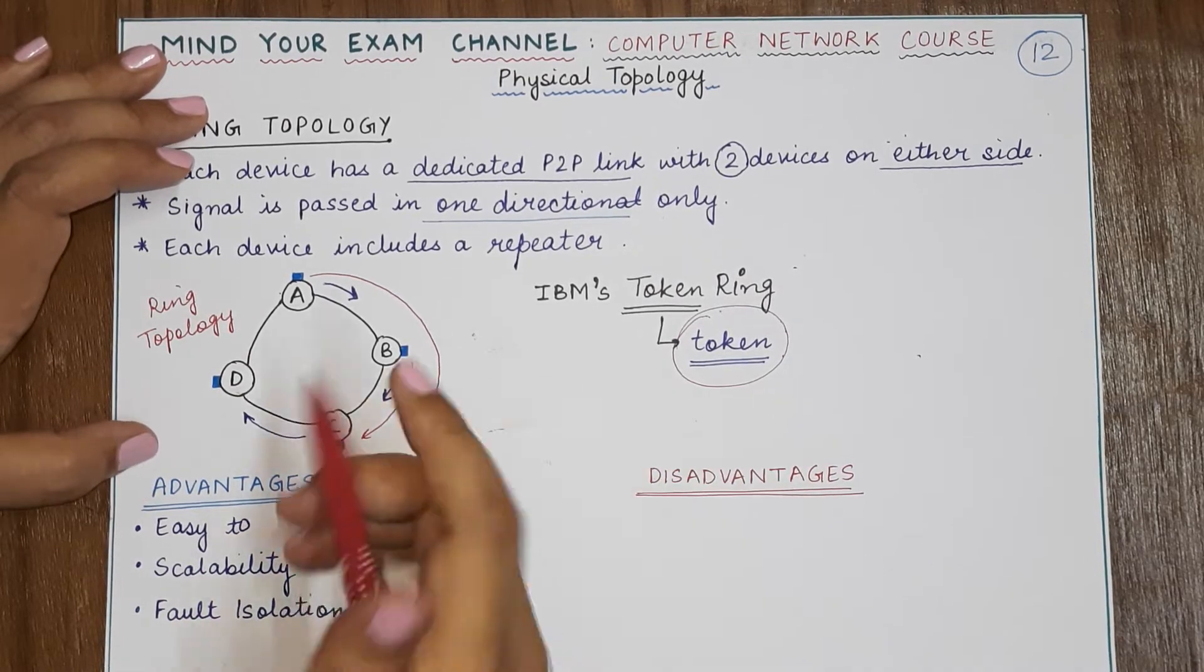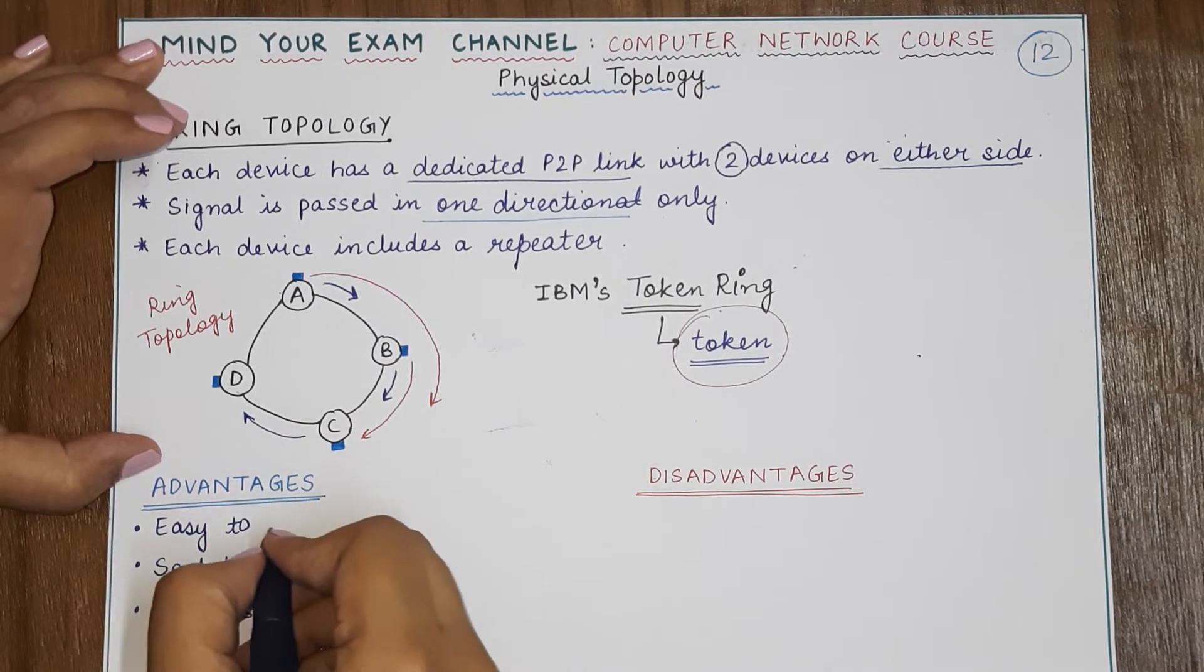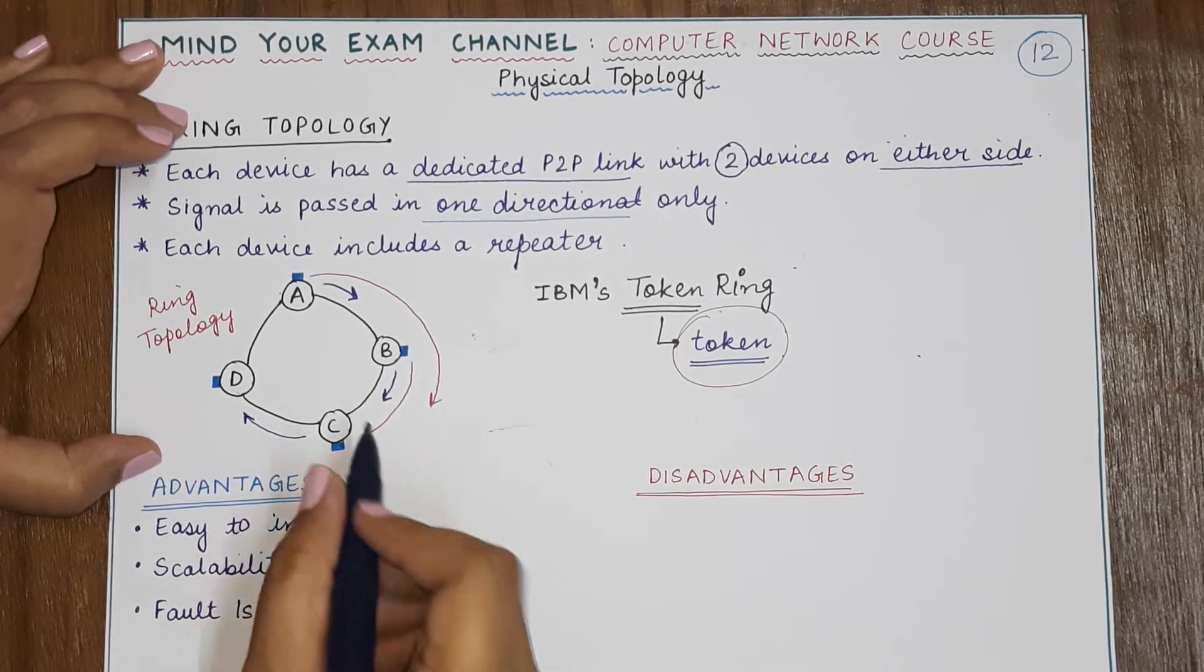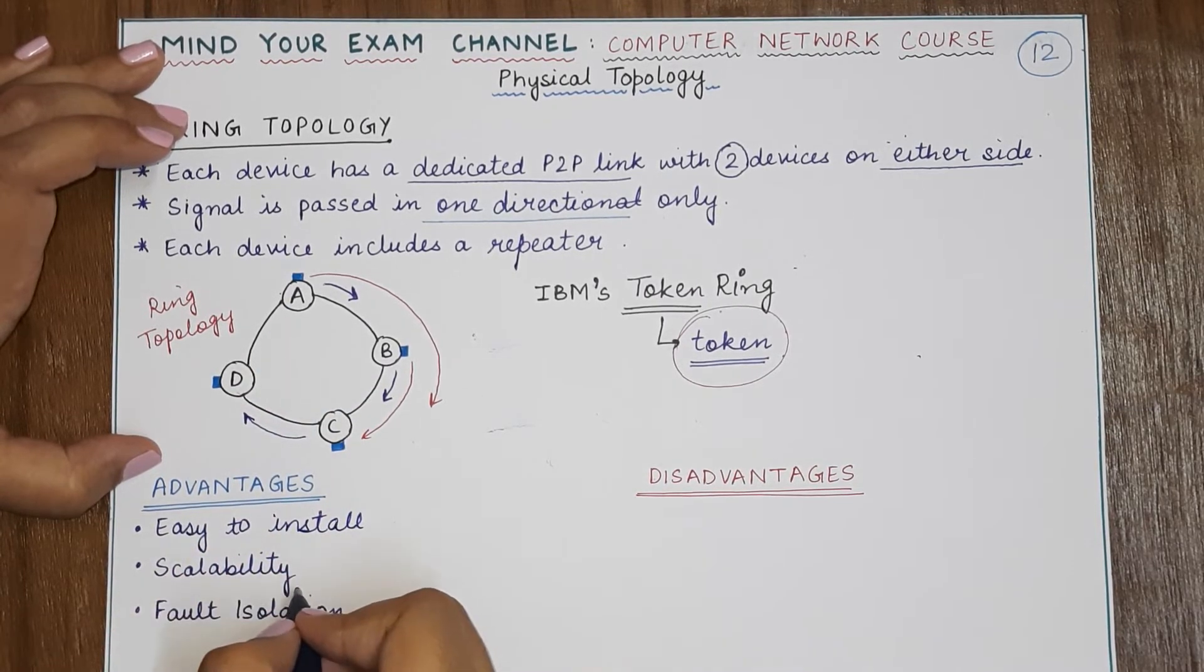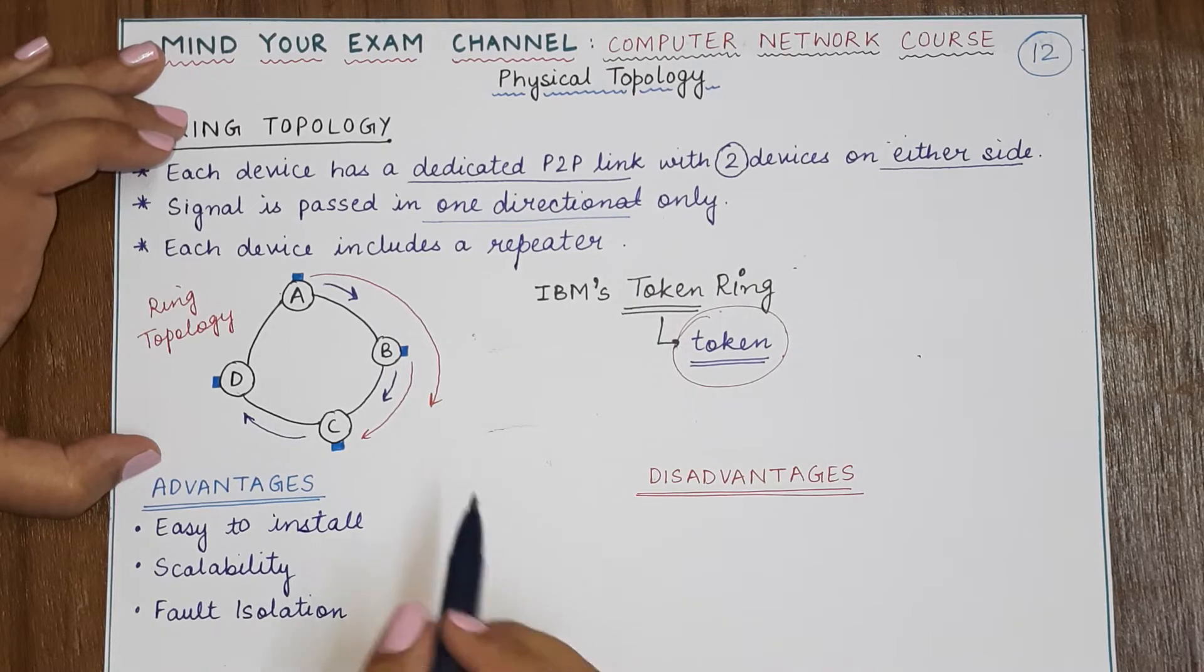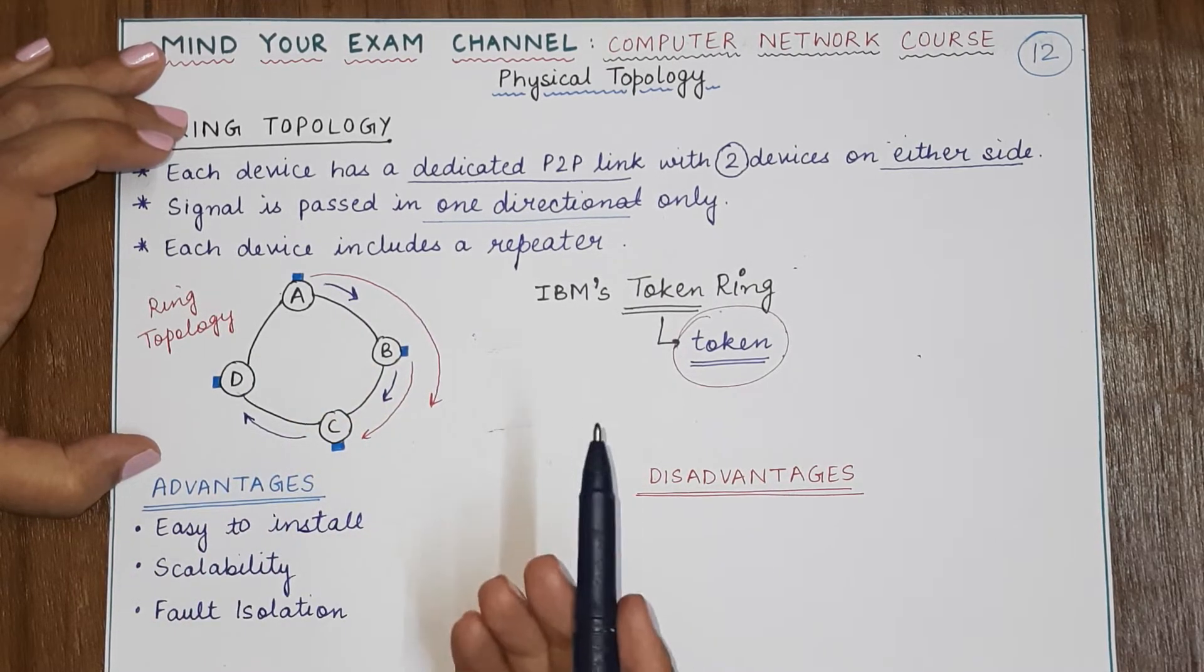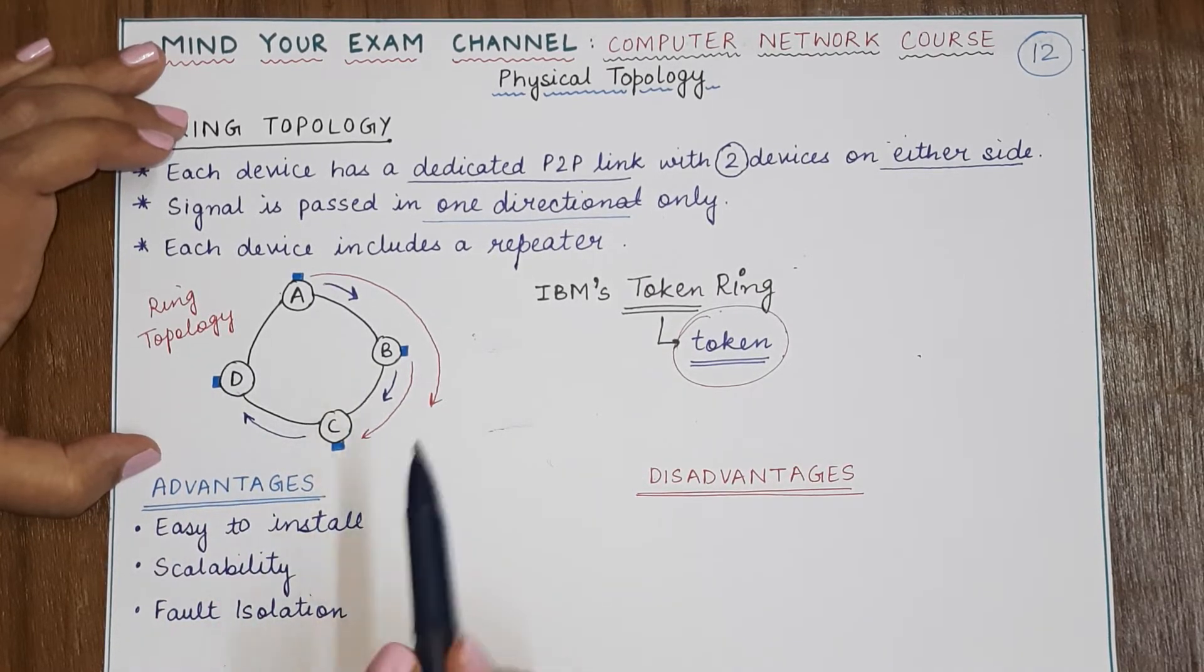Okay, now the advantages of ring topology are that, again, it is easy to install. Every device has to be connected to only two other devices. There are scalability advantages also.